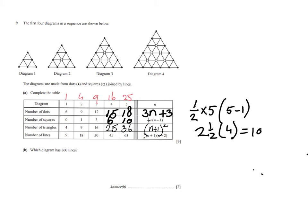Moving on to question B: for 360 lines, which diagram has that many lines? Well, the amount of lines - they give you the term rule there, so we've got to find out when is that going to be 360. So 3/2 times (n+1)(n+2) - when does that equal 360? Well, first of all, we're going to divide both sides by 3/2, or times 2 divided by 3. So (n+1)(n+2) equals 720 divided by 3 - that's 240.